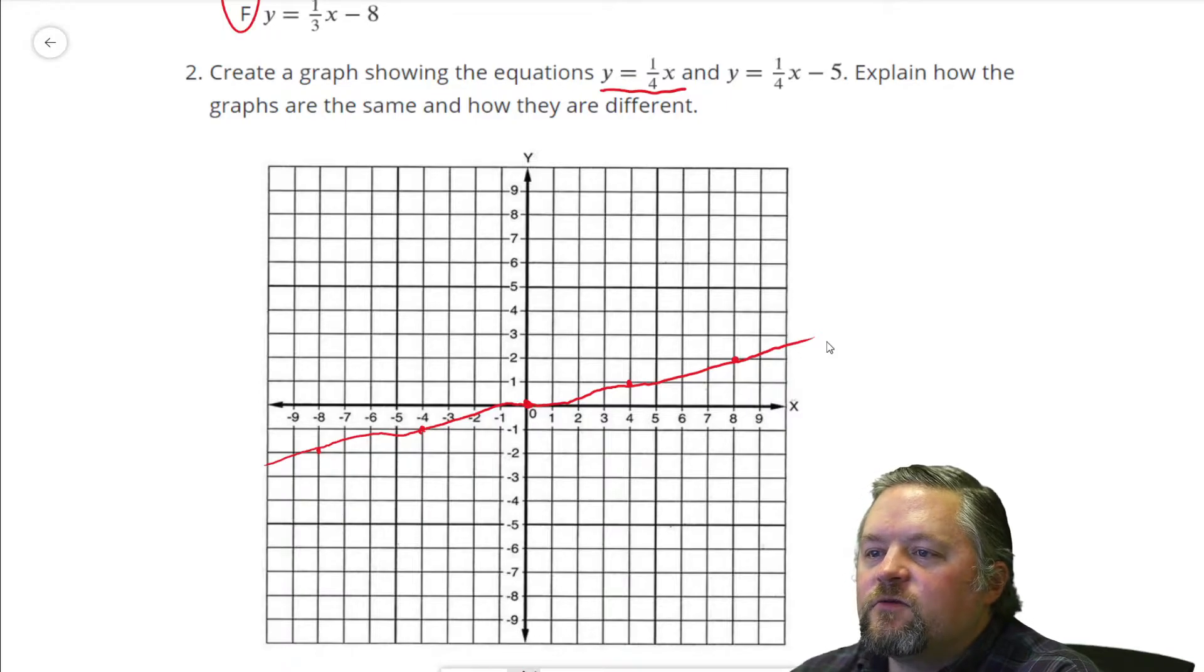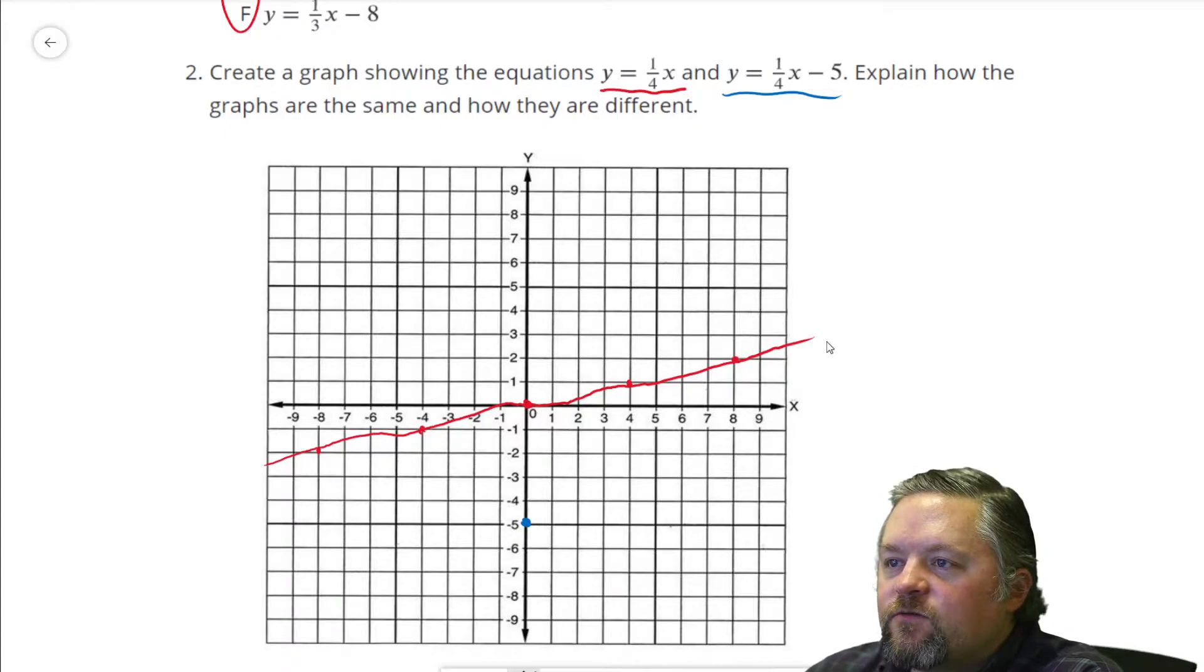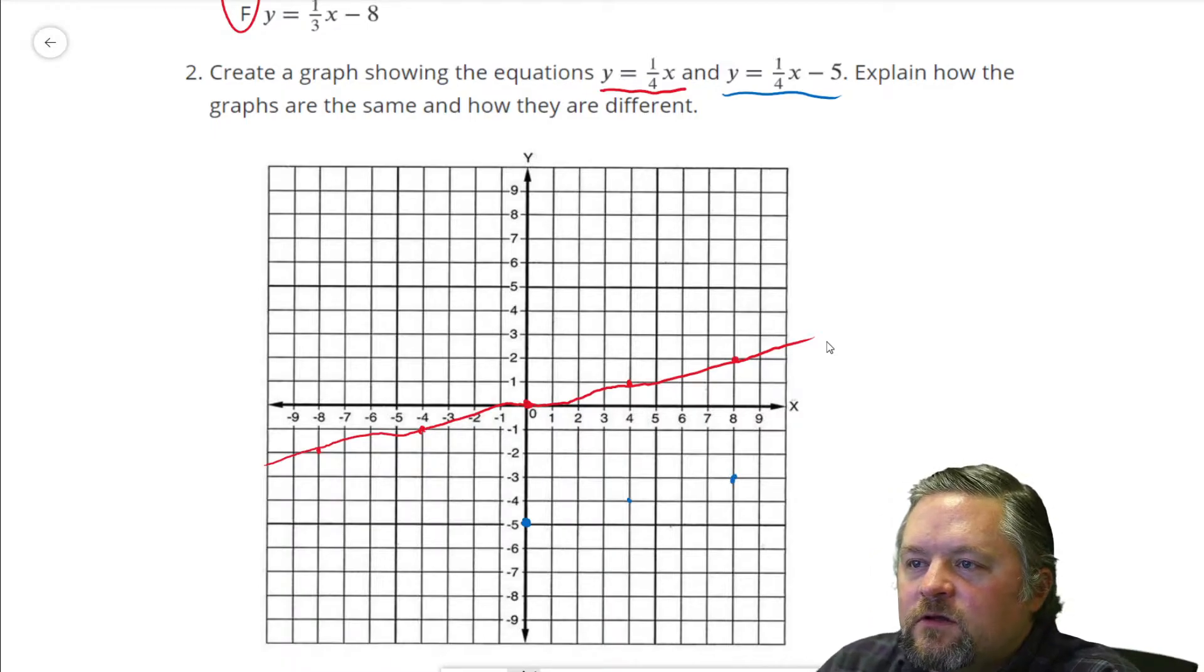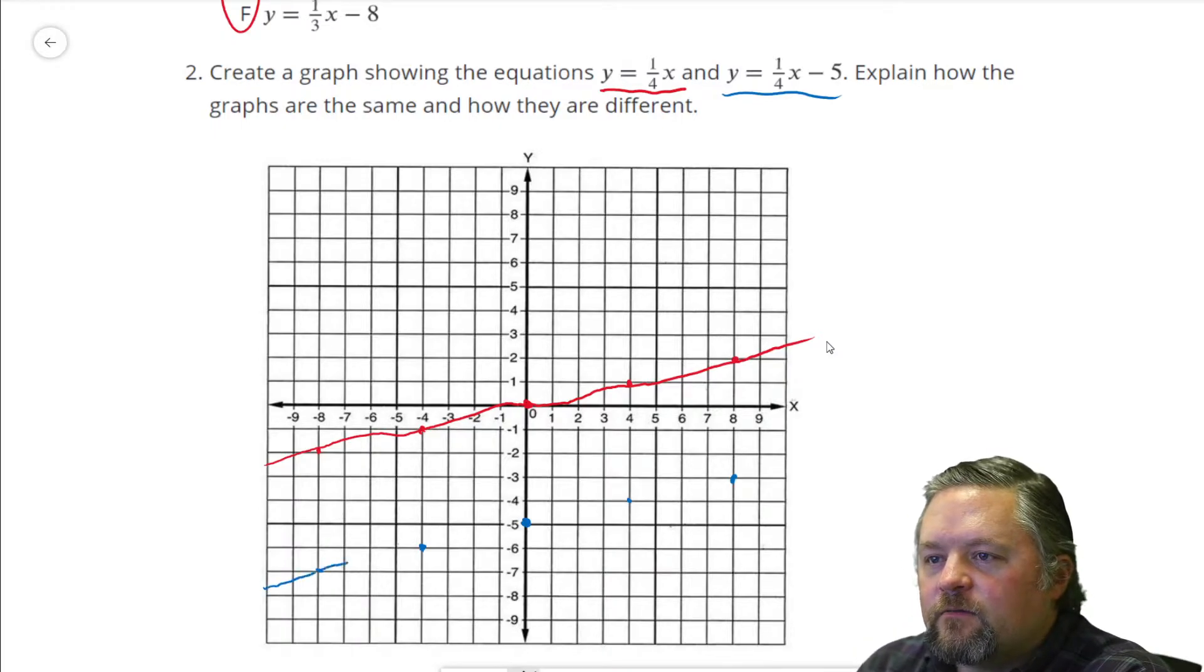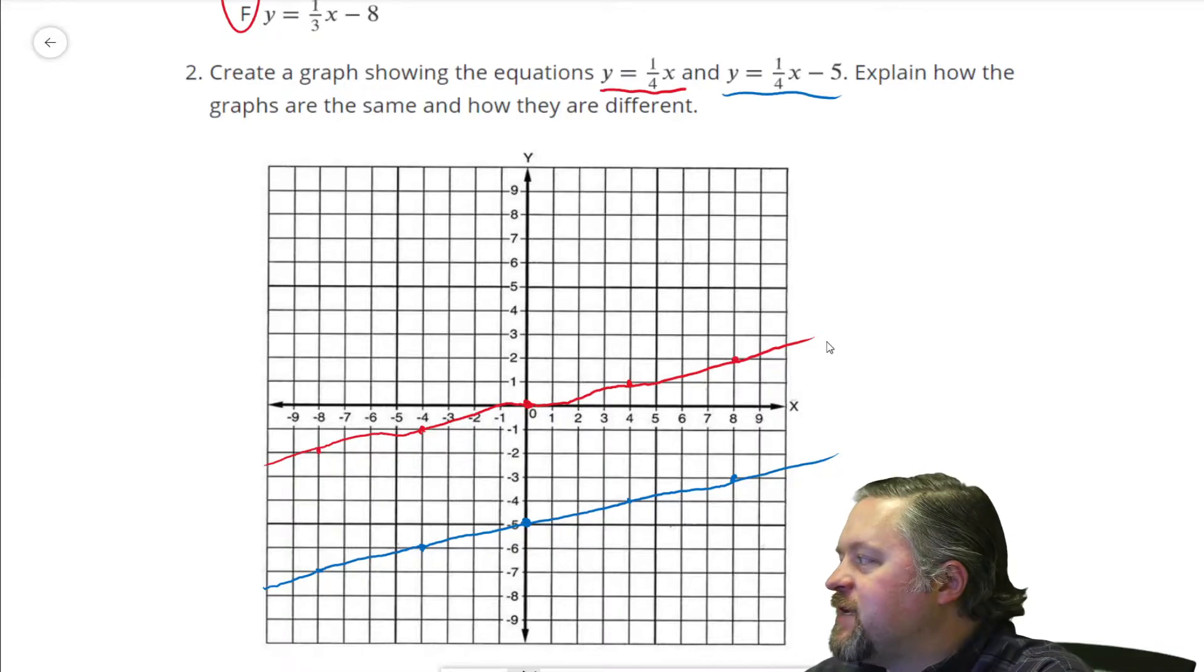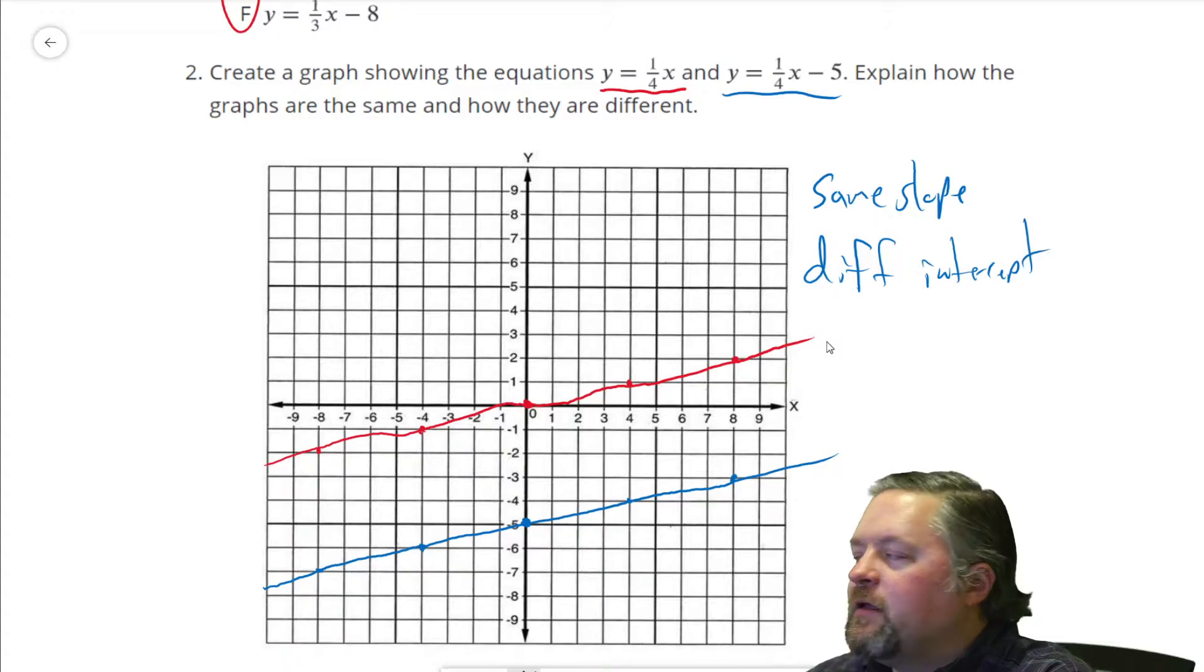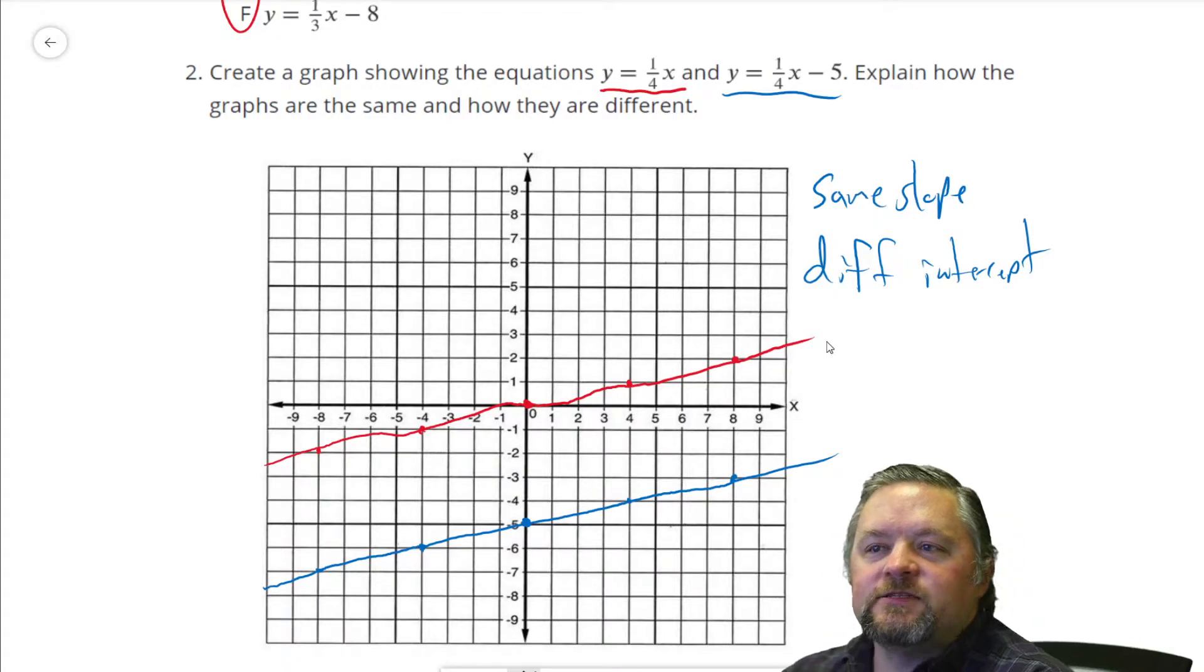Ooh, that's not my best graphing ever. Let's just pretend that it is, though. Okay, and our other line, I'll do in blue. So, y equals 1/4 x subtract 5. That means our y-intercept is negative 5. We still go rise of 1, run of 4. So, up 1 over 4. How are the graphs the same? They have the same slope. Explain how they're different. Different intercept. Same slope, different intercept. That means they're going to be parallel to each other.